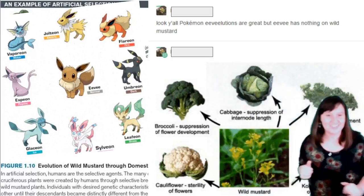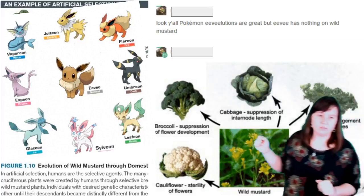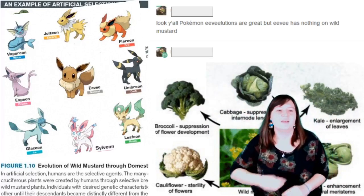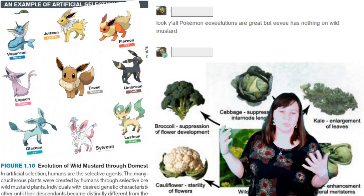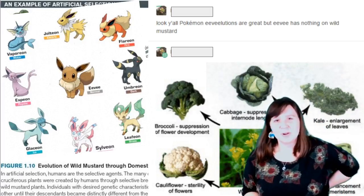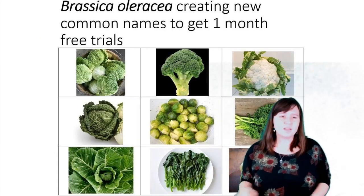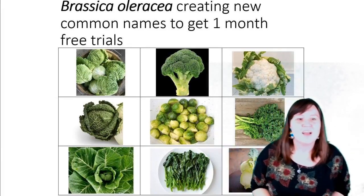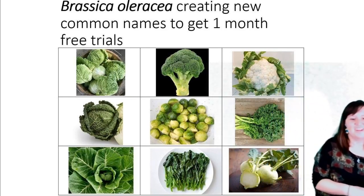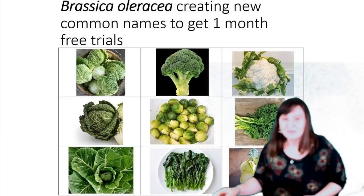It says: 'Look y'all, Pokémon Eeveelutions are great, but Eevee has nothing on mustard.' For those who don't know, Eevee is a Pokémon that can evolve into many different forms — kind of like our mustard plant. I'd argue Brassica oleracea might be a little cooler. There's also another meme: 'Brassica oleracea — creating new common names to get one month free trials.' Brassica oleracea is just that cool that it has its own memes!